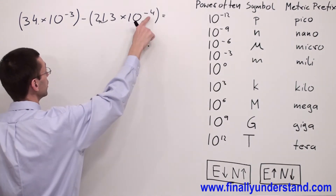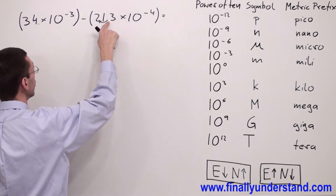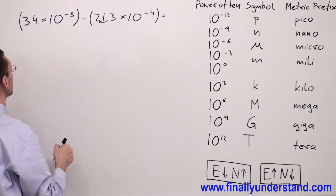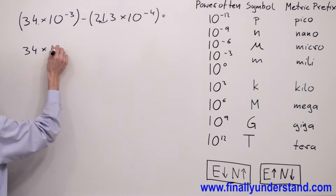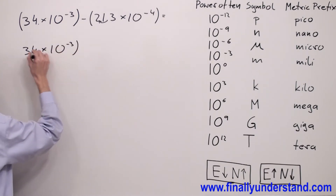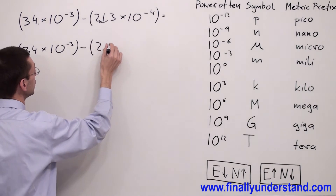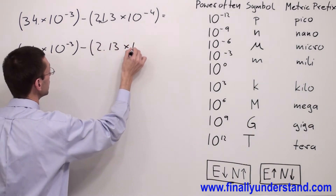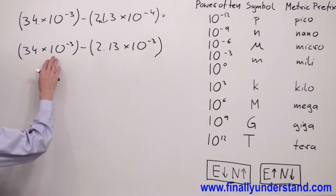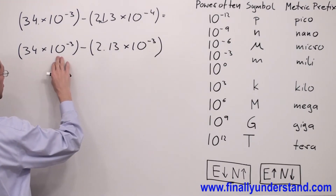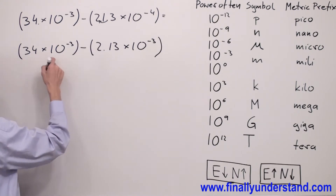Because my exponent went up by 1, I have to move my decimal point once to the left. And I'm going to have 34 times 10 to negative 3 minus 2.13 times 10 to negative 3. We now have the same powers of 10, so we can perform the subtraction of these two numbers.